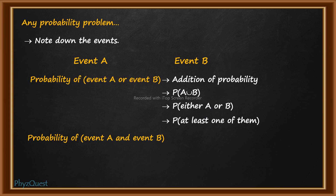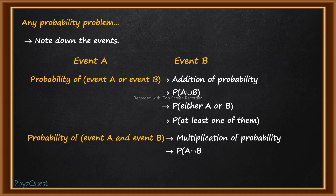Now let's talk about when there is a mention of probability of event A and event B. In that scenario, you need to multiply the probability. Here you have to look for the keyword 'and.' Mathematically, it is represented as probability of A intersection B, where the symbolic representation is intersection.